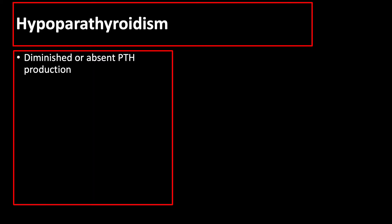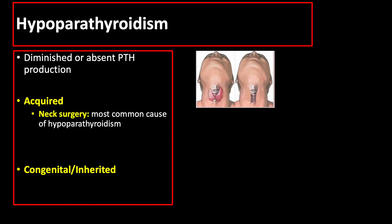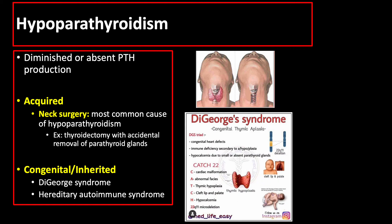The causes of hypoparathyroidism can be acquired, congenital, or inherited. Neck surgery is the most common cause, especially after thyroidectomy with lymph node dissection, as thyroidectomy may result in accidental removal of the parathyroid glands since they are so small. Congenital causes include DiGeorge syndrome and hereditary autoimmune syndrome.